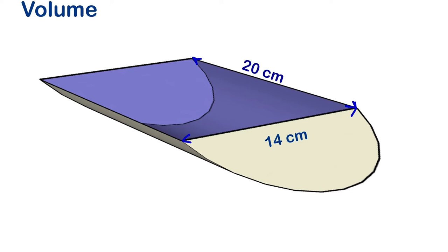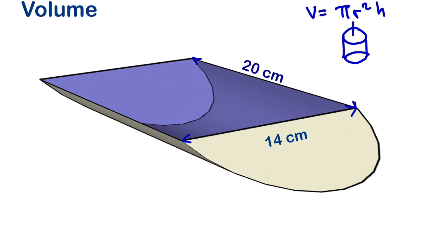The volume of a cylinder is π r squared times height — that is, base area times height. For example, this is our cylinder here, so π r squared represents the area of the circle, multiplied by the height. But for this case we have a semi-cylinder, so we are going to divide it by 2 because it is just half of a cylinder.